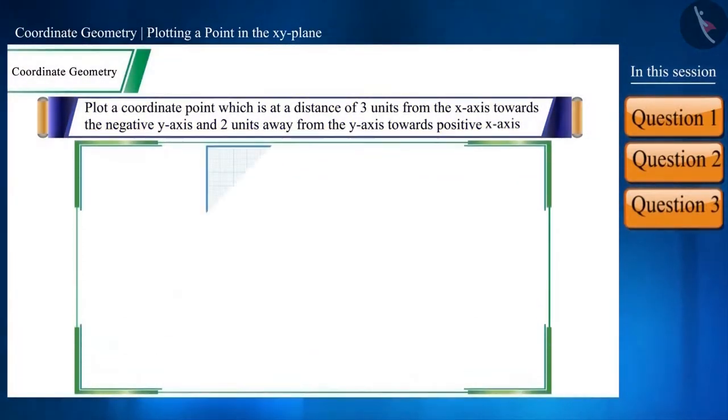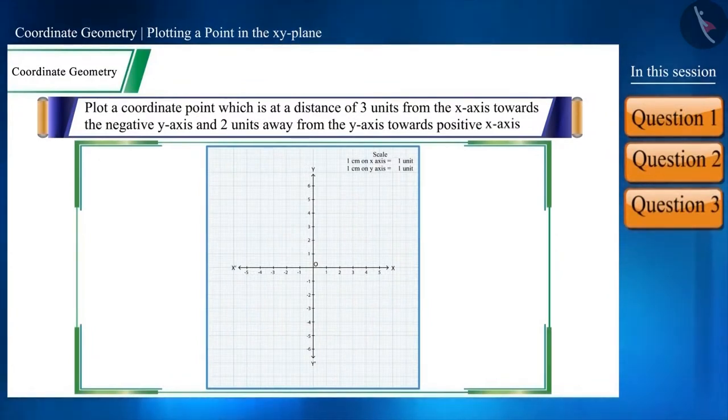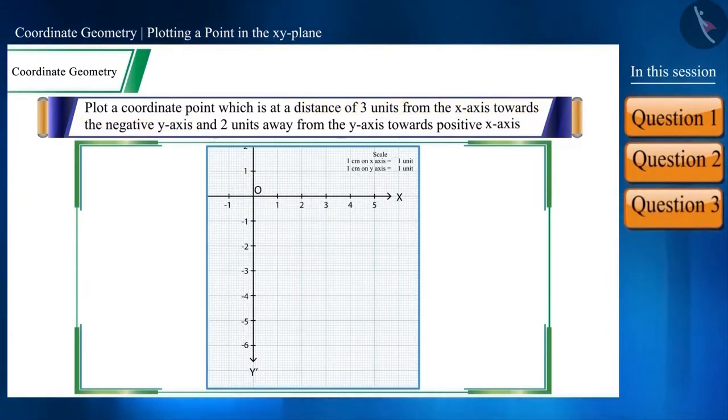The first line says that the point is at a distance of three units from the x-axis to the negative y-axis, that is -3 to the y-axis. And from y-axis towards positive x-axis at a distance of two units, that is two units from -3 on the y-axis to the positive x-axis. That is, it is in the fourth quadrant.